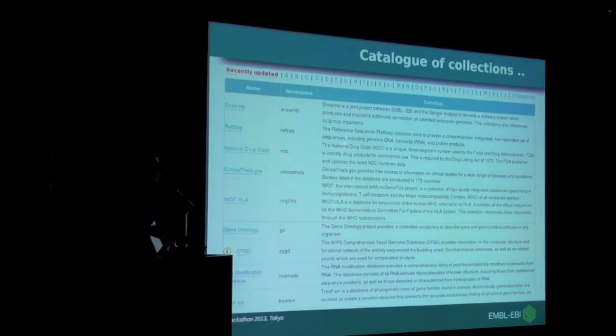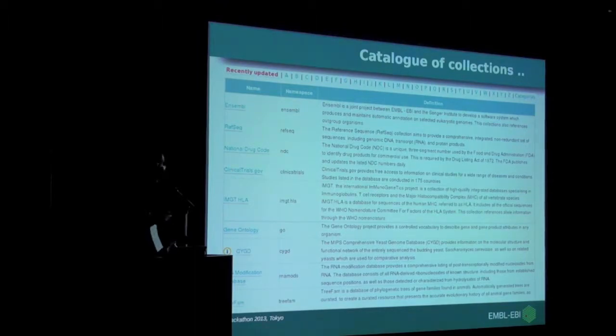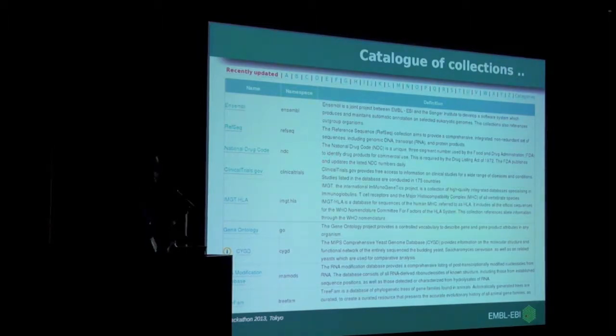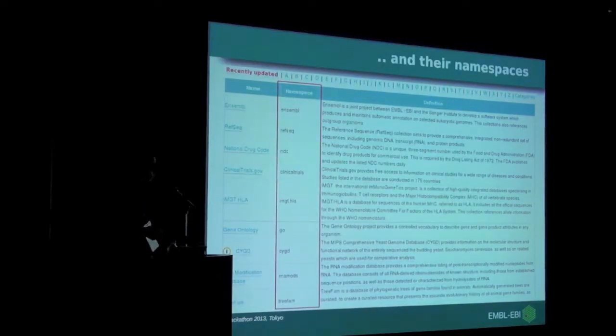What we have is a registry, which is basically a catalogue of data collections. By data collections, we mean sets or pools of data generated by a data provider with a particular perspective on the data. A good example would be PDB, which is data about proteins from a structural perspective. PubMed is also another data collection. You can access the information by browsing or searching, and the browse page gives a listing of data collections and the namespaces we assign to them. Currently we have something like 400 plus data collections in the registry, with others scheduled for release from my curation pipeline.